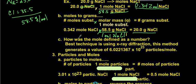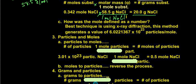How was the mole defined as a number? We found it through what's called x-ray diffraction. We were able to generate a value of 6.022 × 10²³ particles per mole by being able to count how many atoms there are through the interference with x-rays and seeing the shadow it makes.